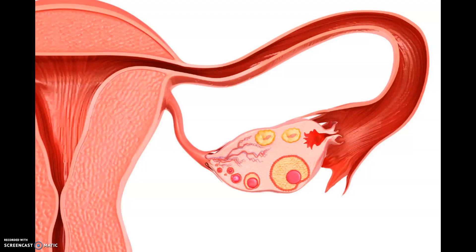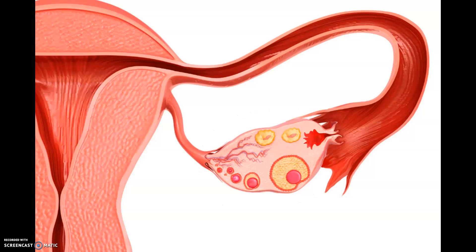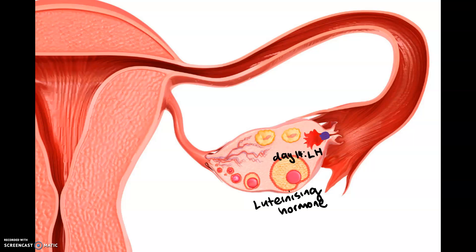We'll start off with the release of the ova from the ovary. The hormone responsible for this is LH — luteinizing hormone — and this occurs at day 14 of the female reproductive cycle. The ova goes and sits in the outer one third of the fallopian tube, where it remains for approximately a day or two waiting for fertilization.